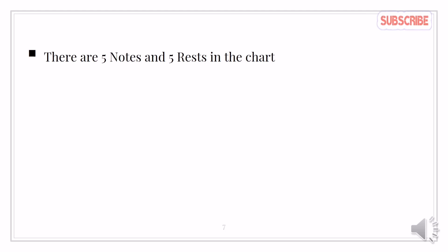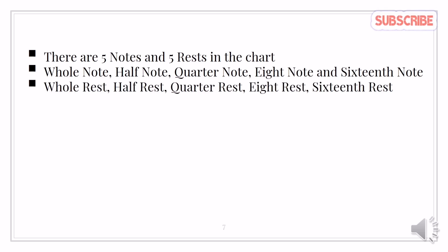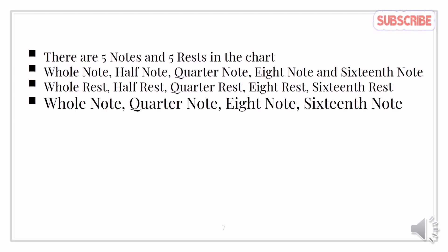There are five notes and five rest in the chart. The kinds of notes are: whole note, half note, quarter note, eighth note, and sixteenth note. We also have whole rest, half rest, quarter rest, eighth rest, and sixteenth rest. Now, what kind of note has a shaded note head, stem, and tail? They are the quarter note, eighth note, and sixteenth note.